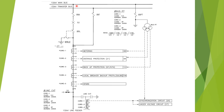Here the 132kV main bus has been shown and this is the 132kV transfer bus. In the feeder bay, which includes 89A (the bus side isolator), one breaker that is 52, one line isolator that is 89L, and one 89T that is the transfer bus side isolator.